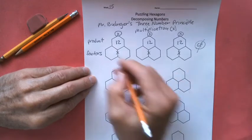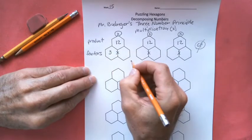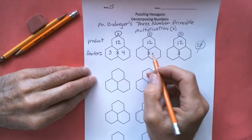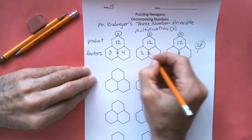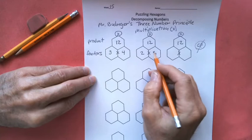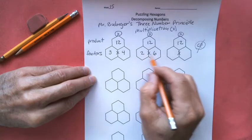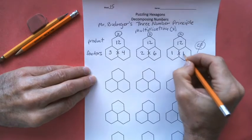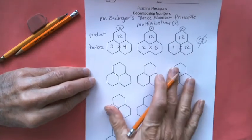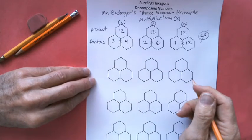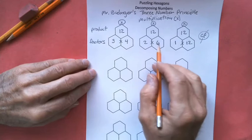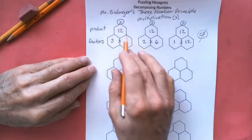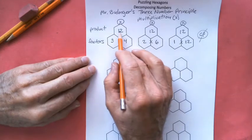Do you remember those numbers? We had 3 times 4 equals 12. And then here we had 2 times 6 equals 12. So these two numbers multiplied together equal that number up there. And then we had one more left. We had 1 times 12 equals 12. So this is how you use these puzzling hexagons. These two numbers down here and the operation you're using has to equal the number up here. They have to be balanced.